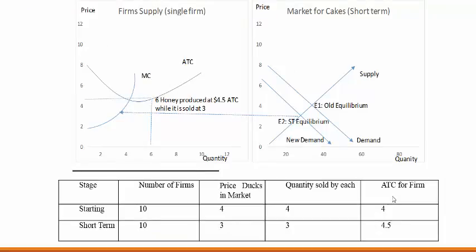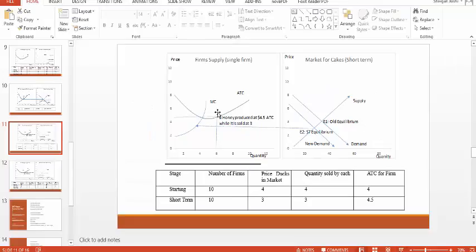So in the short run we saw that the price in the market went down because people were not buying. The quantity sold went down because nobody was buying, same logic. But the average total cost of a company to produce increased to 4.5. So not just that they have to sell at a lower price, the price to produce has also increased. So it's a two-way loss.